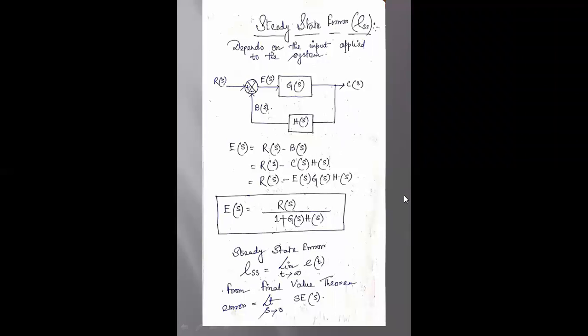Steady state error — we have already known that steady state error is the difference between the reference input and obtained output at t tends to infinity, and it depends on the input applied to the system.